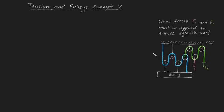G'day guys. In this particular video I'm going to be covering a fairly challenging tension and pulleys example problem. Specifically, we've been asked what forces F1 and F2 must be applied to ensure equilibrium in this system. This green rope we're pulling on with force F2, and this pink rope we're pulling on with force F1. We're asked what are F1 and F2 such that this entire thing is in equilibrium — so nothing's accelerating. Have a shot at this yourself first, then come back when you're done. Let's get started.